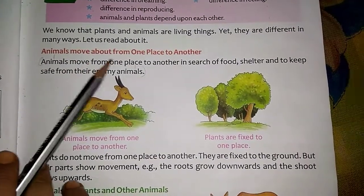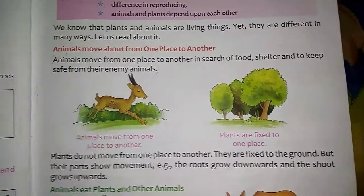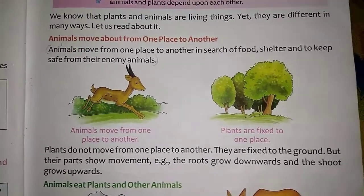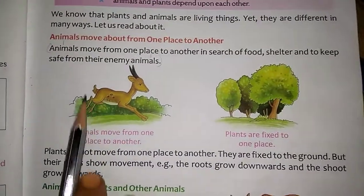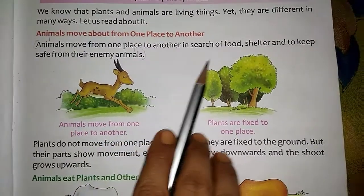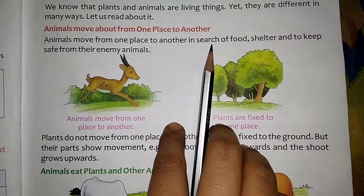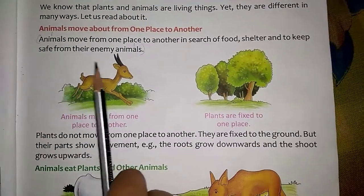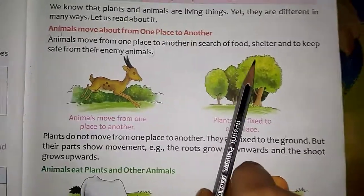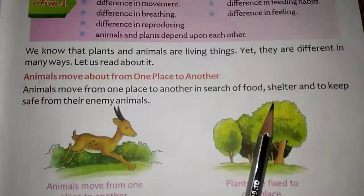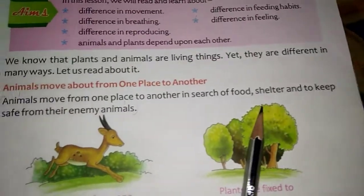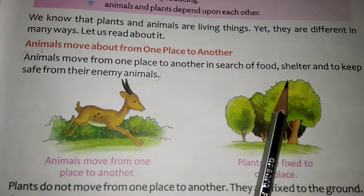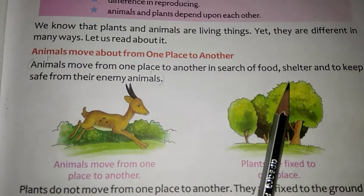Animals move about from one place to another — they can walk, they can run. Animals move from one place to another in search of food, shelter, and to keep safe from their enemies. Shelter means house; animals also require a house to stay. Their enemy animals will eat them.